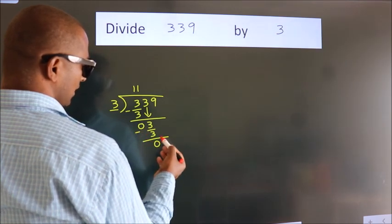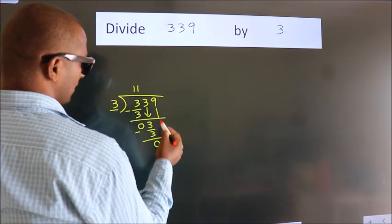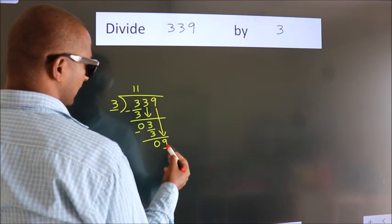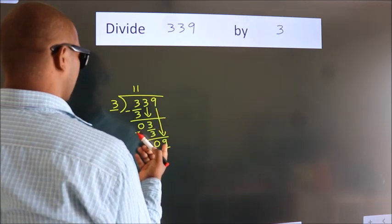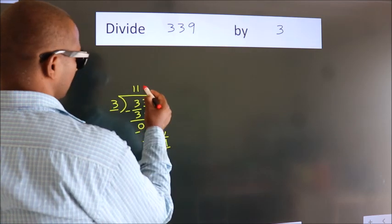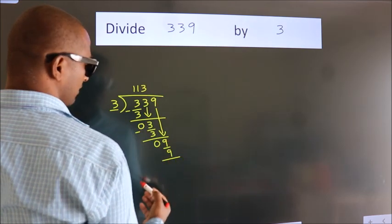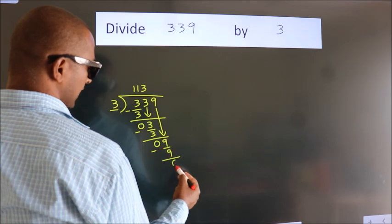We get 0. After this, bring down the beside number. So 9 down. When do we get 9? In the 3 table. 3 threes is 9. Now we subtract. We get 0.